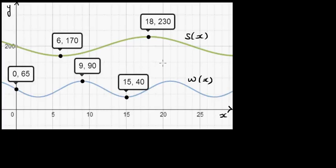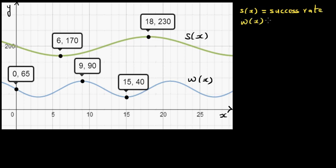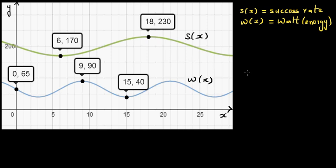I want to write the equation of these two graphs. The top one I'm defining as S of X — S of X stands for the success rate in problem solving. W of X stands for the energy in watts. A human body follows this rhythm called a circadian rhythm. The top graph is for the success rate and W is for the energy.